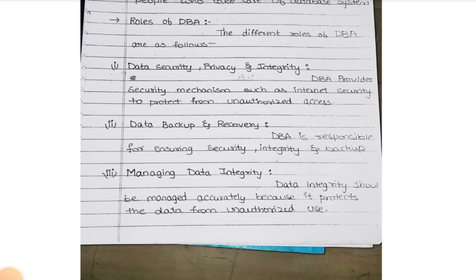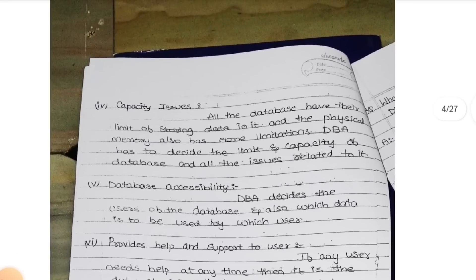Managing data integrity is nothing but protecting the database from unauthorized users. If any unauthorized user is trying to access the data, he needs to be alert to rectify that. He needs to be alert to the organization about who is an authorized person and who is not. Next, capacity issues - databases have some capacity issues. Like in our phones - 256 GB, 120 GB - the ability to store the data, it is his responsibility to check that.